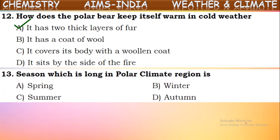Next question: which season is found in polar climatic regions for a long time? In the polar regions, the season that is maintained for a long time is winter. The temperatures are maintained around minus 40 degrees Celsius. Winter season — very cool temperature — is the answer.